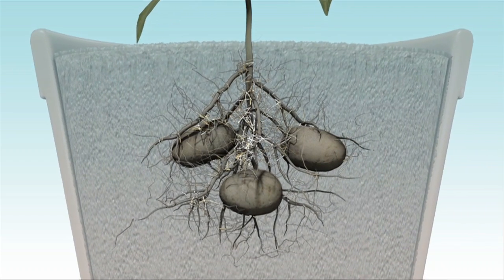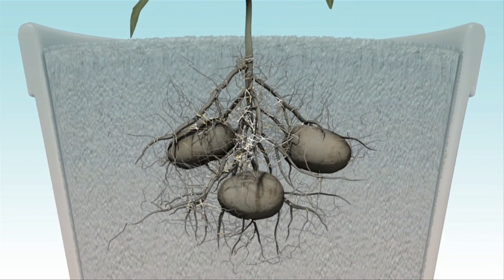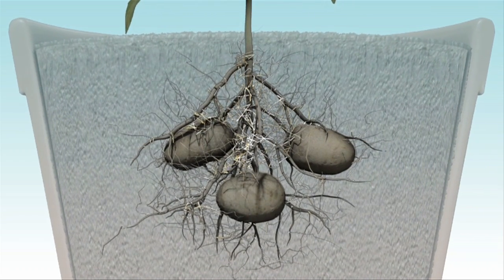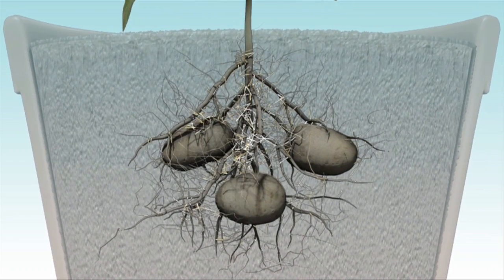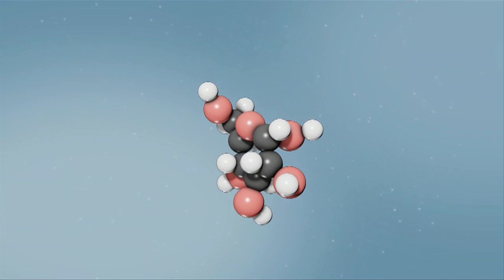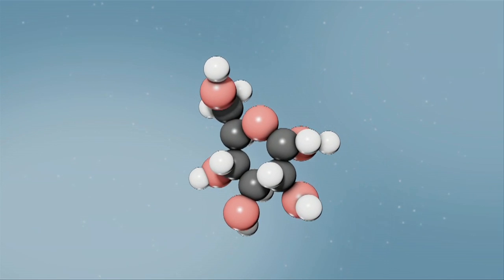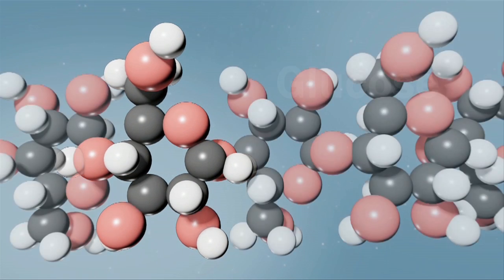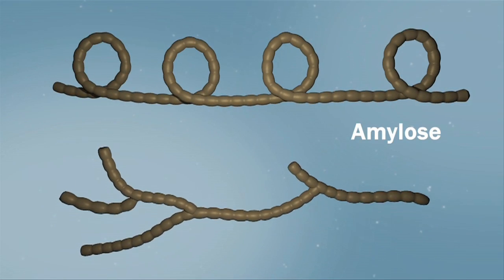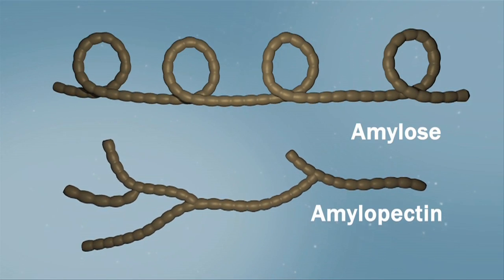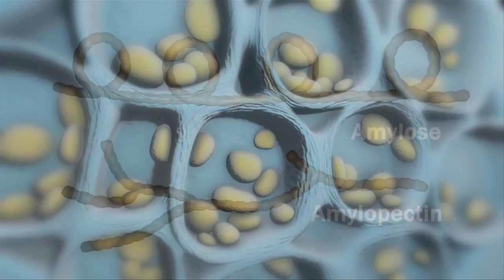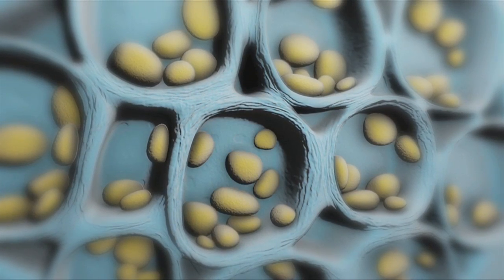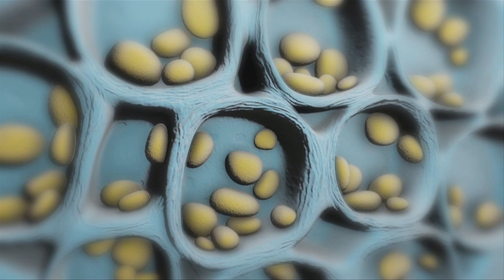Starch is a polymer of the sugar glucose, but can be put together by the plant into two forms: linear amylose and branched amylopectin. Starch is stored in granules formed inside plant tissues.